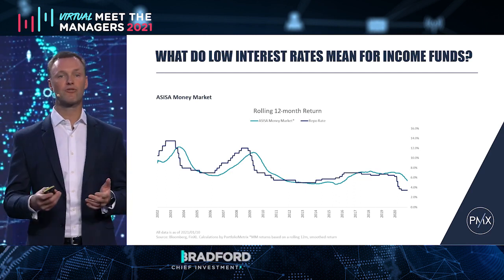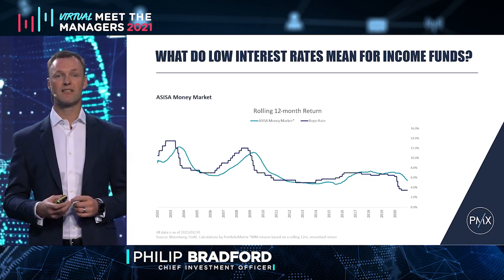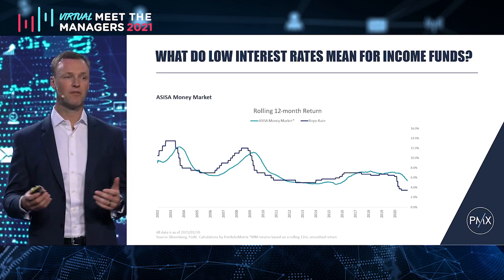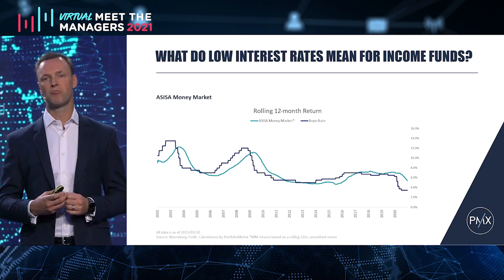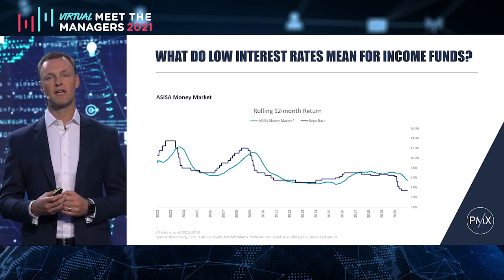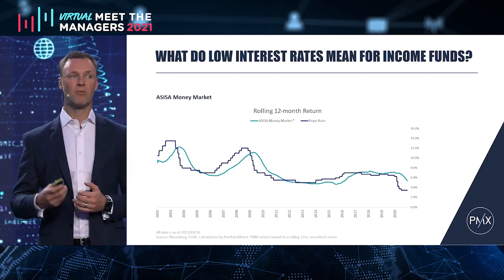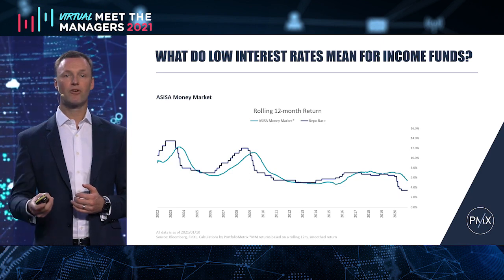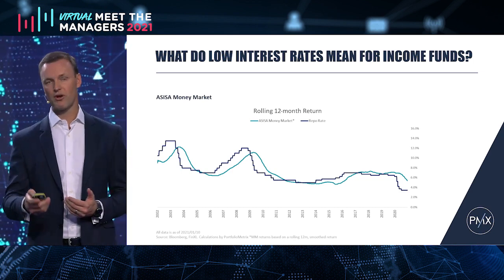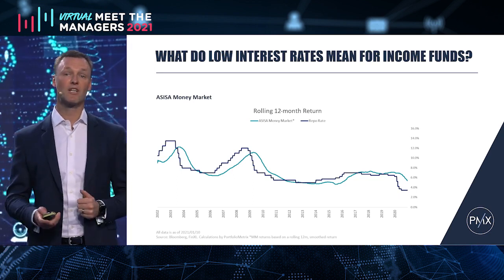Back in 2002, you could get nearly 12% out of money market, and in 2008-2009 it was around 11%. From towards the end of 2019 to current, we've cut interest rates by 3.5%, and you can see how money market rates are trending down — the rolling return is now around 4.5% and is probably going to get closer to the repo rate. For those of us who would love those 10%, 11%, 12% returns of the old days, unfortunately those days are over.